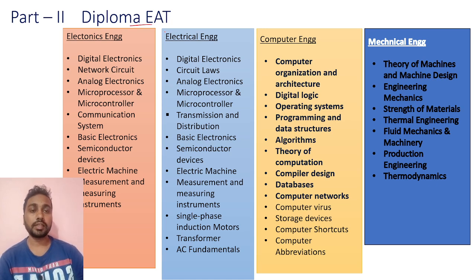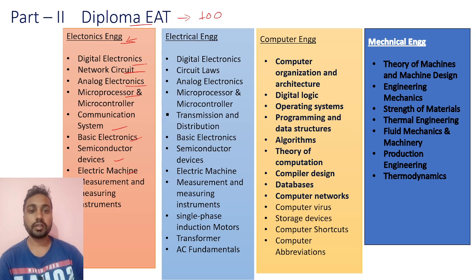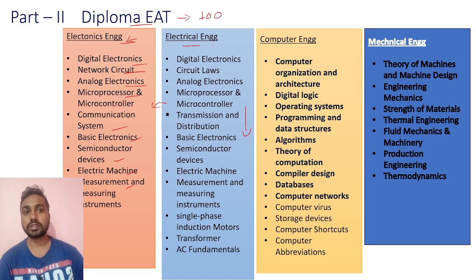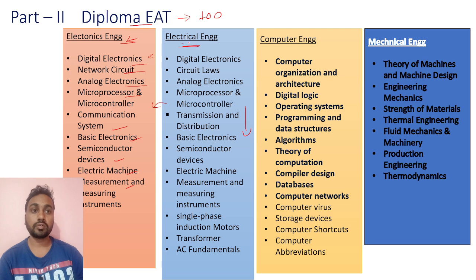For Diploma in Electronics Engineering, you will get 100 questions for 100 marks. Topics include digital electronics, network circuits, analog electronics, microprocessor, microcontroller, communication systems, basic electronics, semiconductor, electrical machines, and measurement and measuring instruments. For Electrical Engineering, there are similar topics with some overlap from electronics. Last year in Electrical Engineering, more questions came from an electronics background.